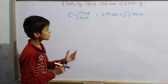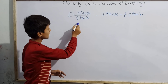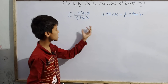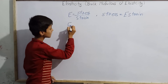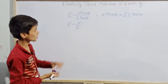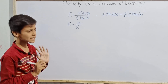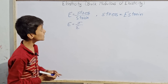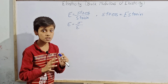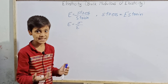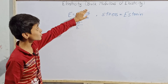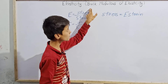So modulus of elasticity E is the ratio of stress and strain, which in simple form we write as sigma divided by epsilon, because sigma stands for stress and epsilon stands for strain. Now we need to understand bulk modulus of elasticity specifically, because under modulus of elasticity there are many kinds — bulk modulus, Young's modulus, and more. So we need to particularly focus on bulk modulus.